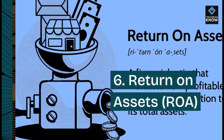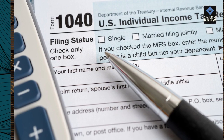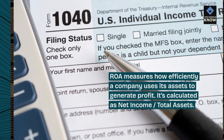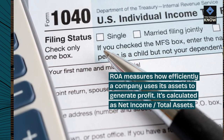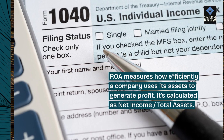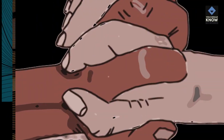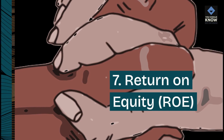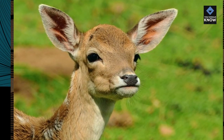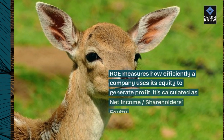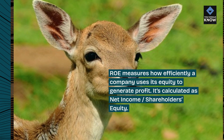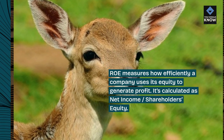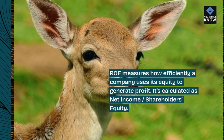6. Return on assets, ROA. ROA measures how efficiently a company uses its assets to generate profit. It's calculated as net income divided by total assets. 7. Return on equity, ROE. ROE measures how efficiently a company uses its equity to generate profit. It's calculated as net income divided by shareholders' equity.